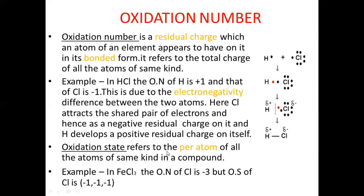Oxidation state refers to the charge per atom of all atoms of the same kind in a compound. For example, in FeCl3, the oxidation number of Cl is minus 3, but the oxidation state of Cl is minus 1 per atom. So, oxidation state is the oxidation number per atom, or the residual charge per atom, while the oxidation number is the sum of all the oxidation states of all atoms of the same kind.